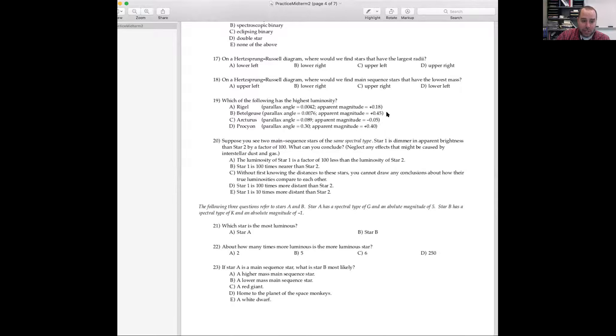You know that Rigel is further away than all of them because it has the smallest parallax angle, and it's among the brightest. Betelgeuse, which is closer to us and is fainter, must have a lower luminosity. Procyon, which is closer to us and fainter than Rigel, must have a lower luminosity. Arcturus appears brighter, but it's a lot closer. So you might have to go through and actually do the math for Arcturus, but I'm guessing that A is in fact the right answer, even without actually going through all the rest of them. Good question. That's probably the hardest one on the whole thing.